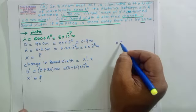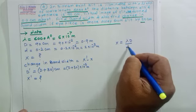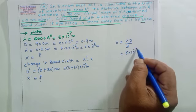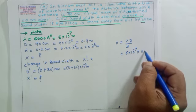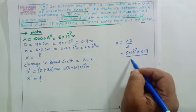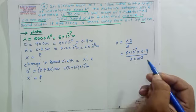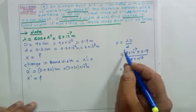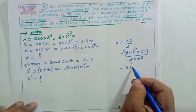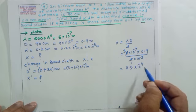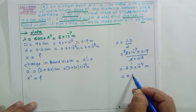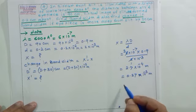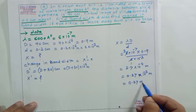Using bandwidth formula x = λD/d: x = (6 × 10⁻⁷ × 0.9) / (2 × 10⁻³). Here 2 divides into 6 three times, and 3 × 9 = 27. So x = 27 × 10⁻⁴ = 0.27 × 10⁻³ meter = 0.27 millimeter.